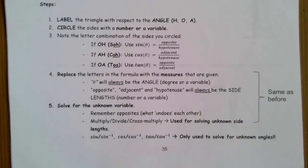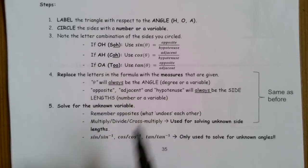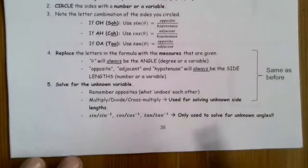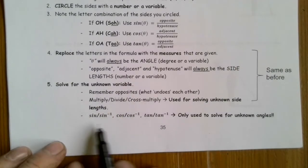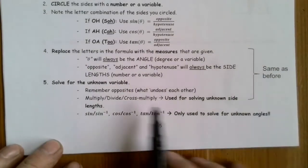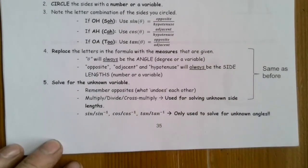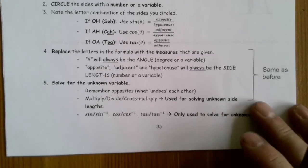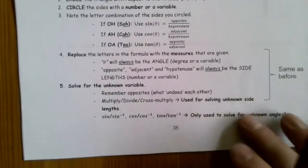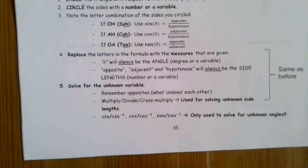We'll determine whether this is a sine, cosine, or tangent question. Then we replace the letters in the formula with the measurements given — theta is always the angle, and opposite, adjacent, and hypotenuse are side lengths. We solve for the unknown variable, which might involve cross-multiplying and dividing. If you're looking for an angle, you may need to use the inverse trig function. Now let's look at some examples.